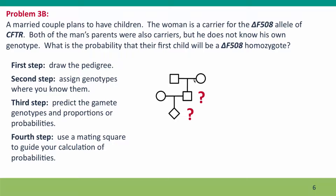We assign the genotypes we know: the mother is heterozygous, and both of the father's parents were heterozygous. We don't know the father's own genotype. We then predict the gamete genotypes and their proportions, which is exactly the same prediction as before: each heterozygous person produces 50% plus gametes and 50% minus gametes.